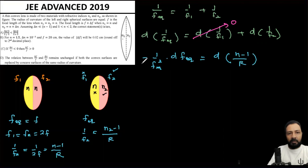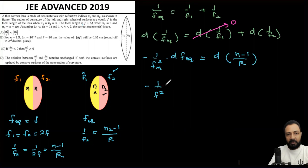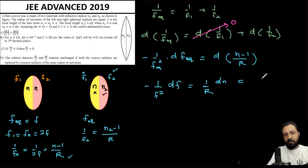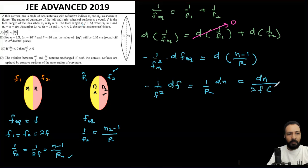The initial value of f_eq is f, so I write minus 1/f² times df on the left. On the right, 1/R is a constant so it comes outside; d(n minus 1) equals dn, since d(1) equals 0. From the earlier equation, 1/R equals 1/(2f) times 1/(n minus 1). Substituting, I get dn divided by [2f(n minus 1)], and the 1/f cancels, giving finally: minus df/f equals dn divided by 2(n minus 1).